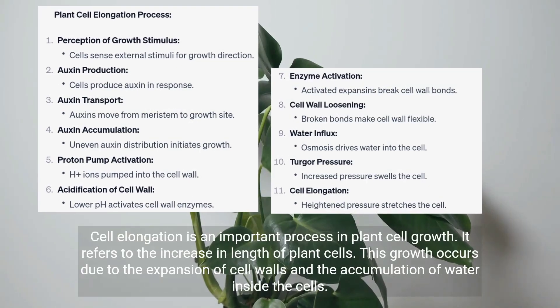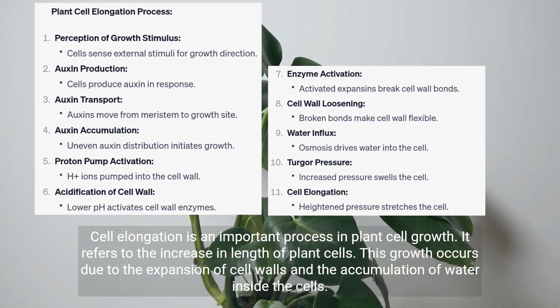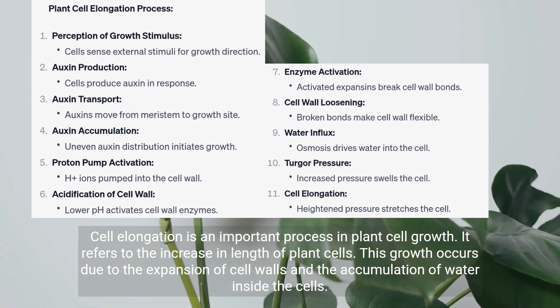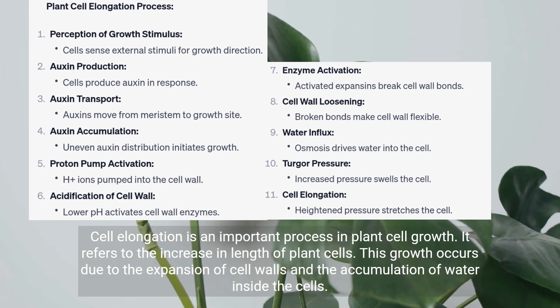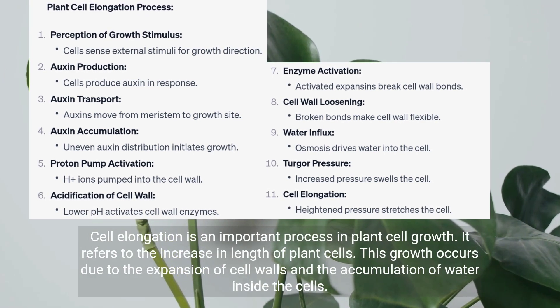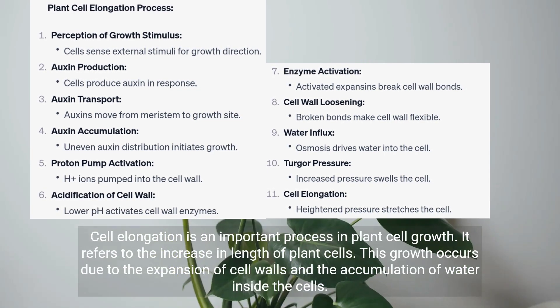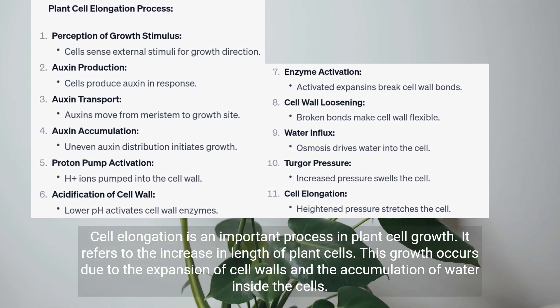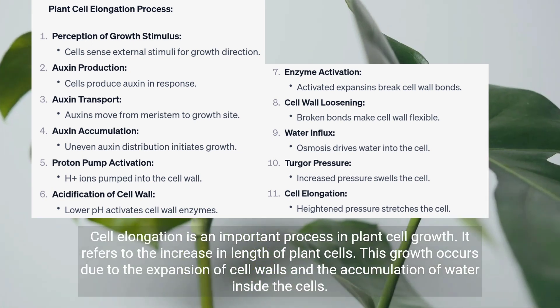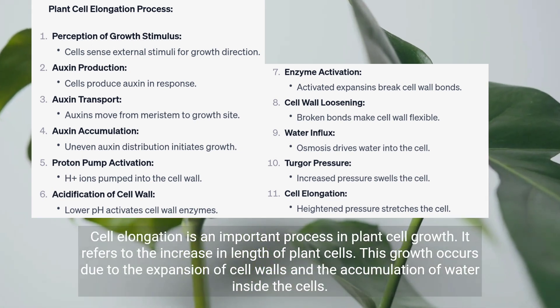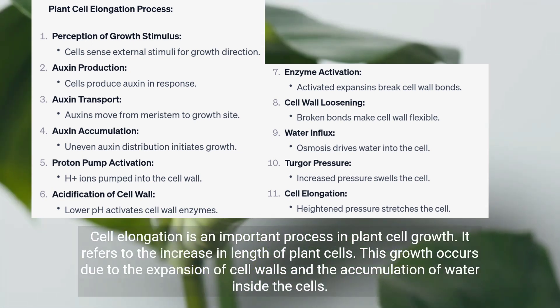Cell elongation is an important process in plant cell growth. It refers to the increase in length of plant cells. This growth occurs due to the expansion of cell walls and the accumulation of water inside the cells.